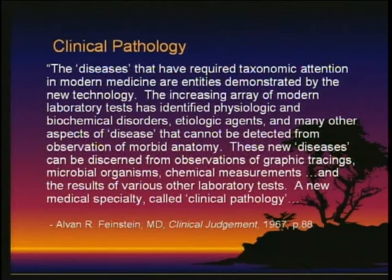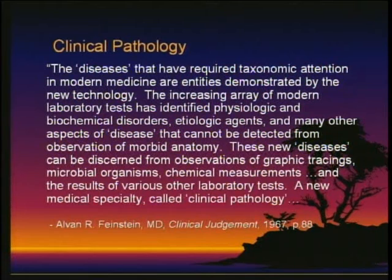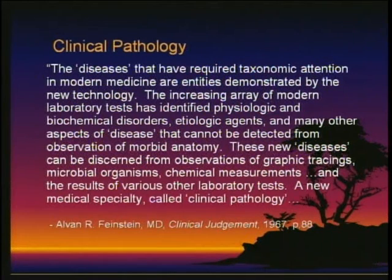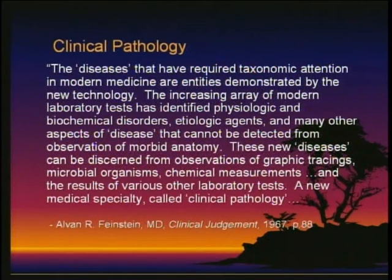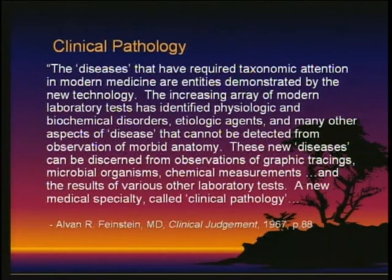Alvin Feinstein, who wrote the famous book Clinical Judgment — examining how physicians put together their differential diagnosis from history, physical, and laboratory findings — said: 'The diseases that have required taxonomic attention in modern medicine are entities demonstrated by the new technology. The increasing array of modern laboratory tests has identified physiologic and biochemical disorders, etiologic agents, and many other aspects of disease that cannot be detected from observation of morbid anatomy. These new diseases can be discerned from graphic tracings, microbial organisms, chemical measurements, and the results of various other laboratory tests — a new medical specialty called clinical pathology.'